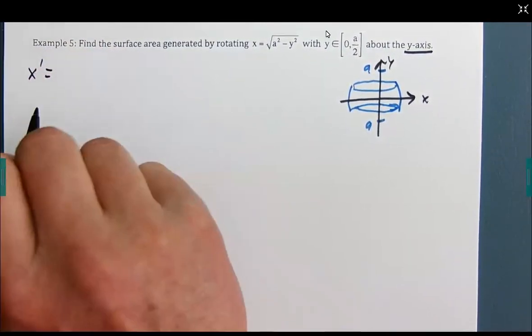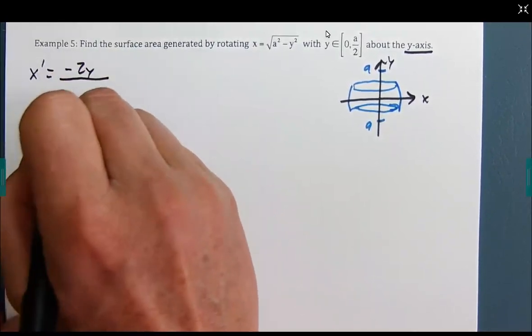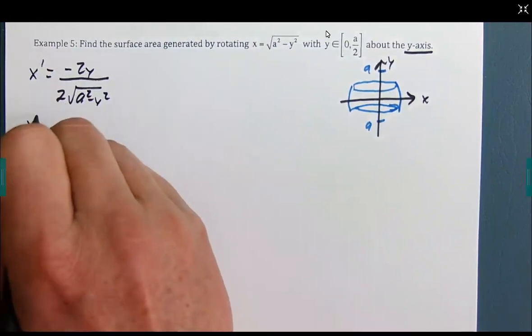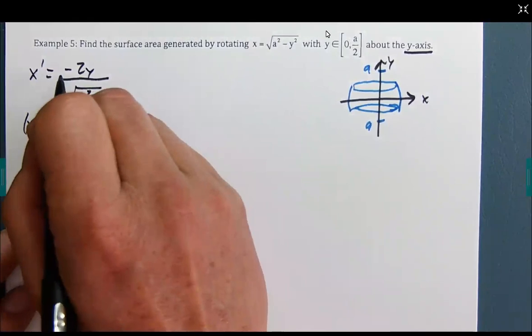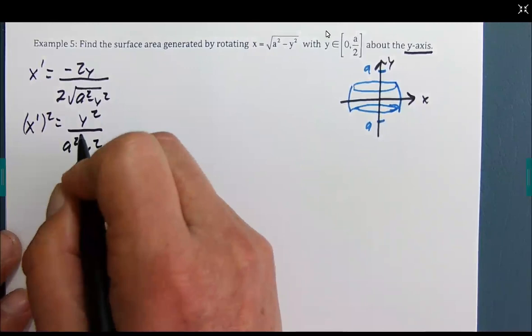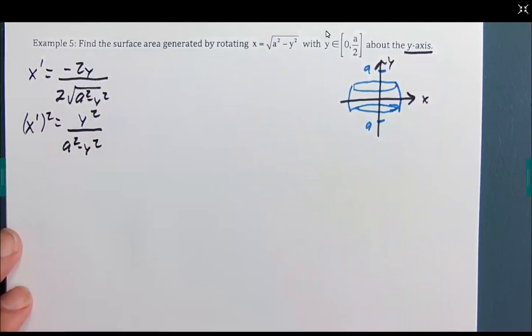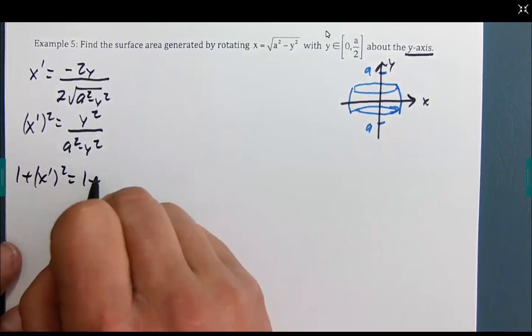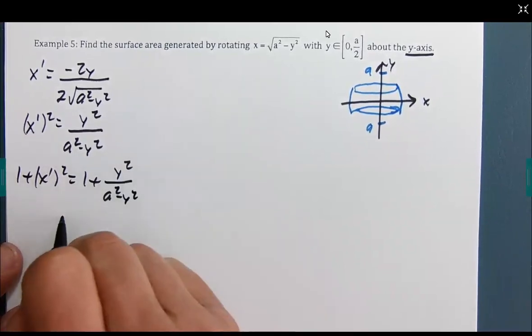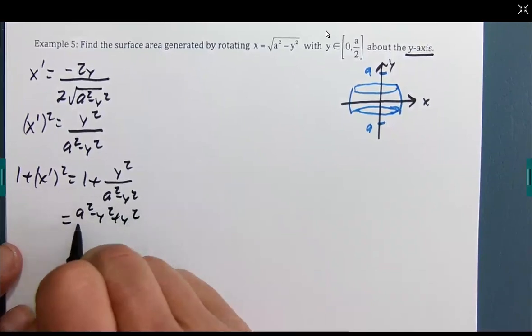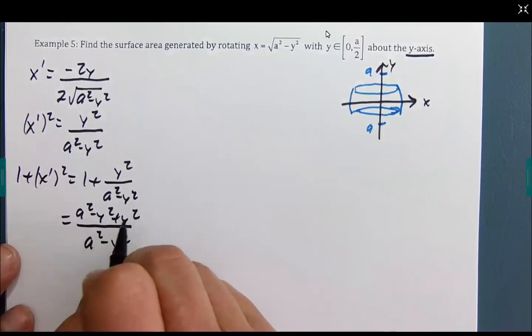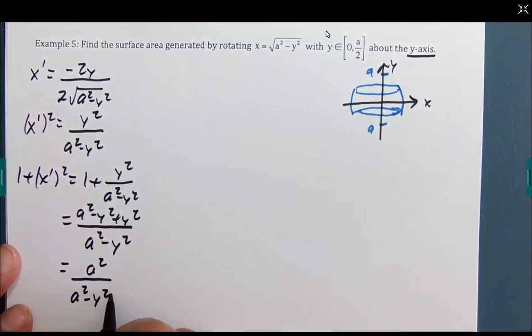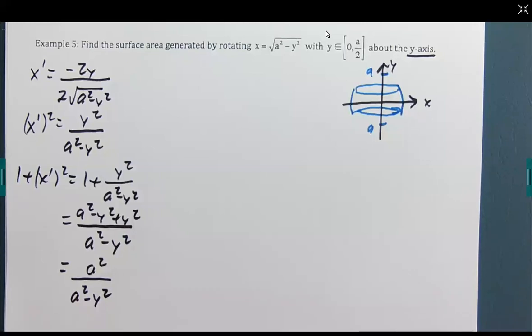Let's do this. x prime is going to be -2y over 2 square root of a² minus y². And the twos reduce out. But when I square that, the negative goes away, as does the radical. And when I add one to that, we get a² minus y² plus y² all over the same denominator. Getting a common denominator here. Of course. Negative y² and y² cancel out. If this is looking familiar, that's because we just did one almost identical to it. The A was a 4 at the time. Or A was a 2 squared was a 4. So we end up here.